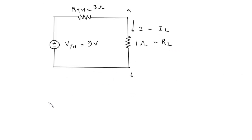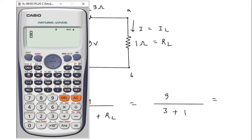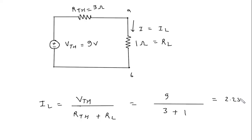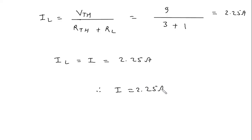The formula for IL is: IL equals Vth divided by (Rth plus RL). So IL equals 9 divided by (3 plus 1), which gives 9 by 4 equals 2.25 ampere. Therefore I is equal to 2.25 ampere.